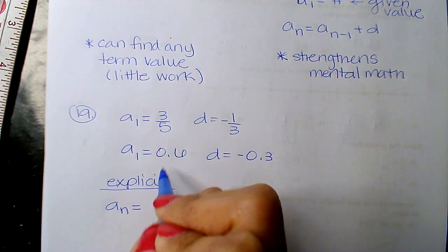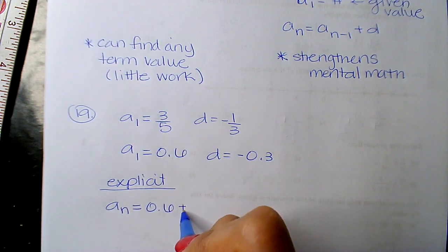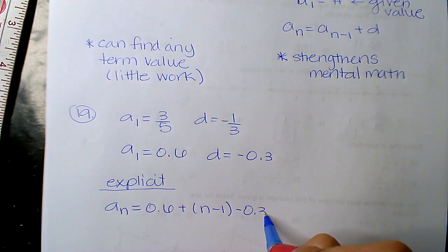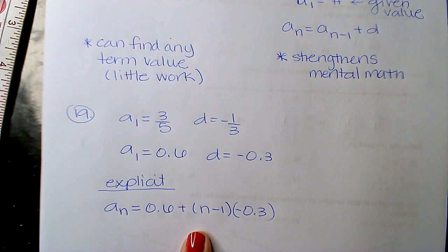A_n is equal to the first term plus n minus 1 quantity times my common difference, right?